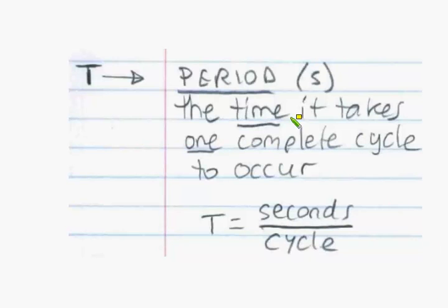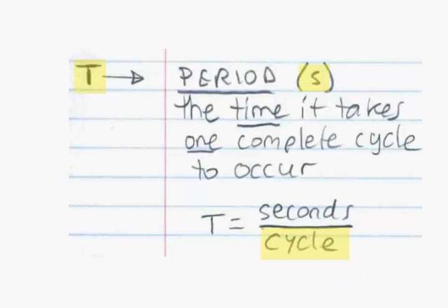Next we're going to talk about period, and the period is actually fairly straightforward. It's capital T because it stands for time, and it's a very specific time — it's the number of seconds it takes to complete one cycle of the motion, to completely move from one side to the other side and back again before it repeats.